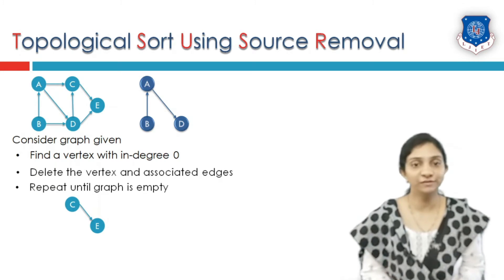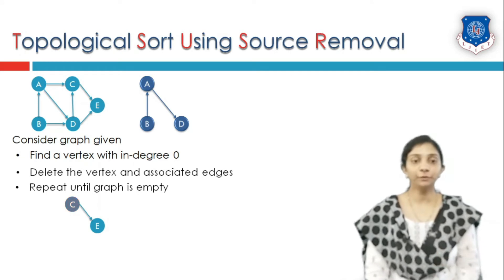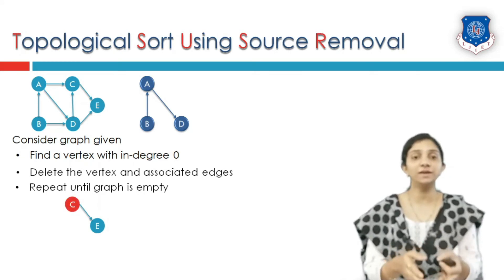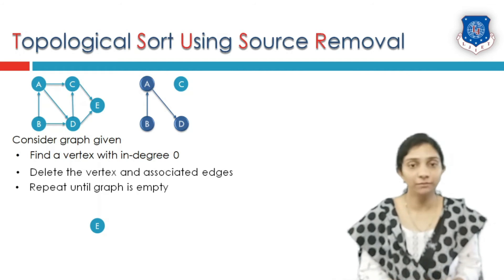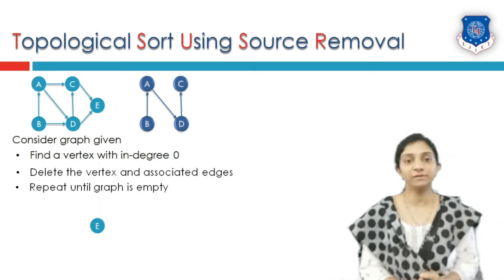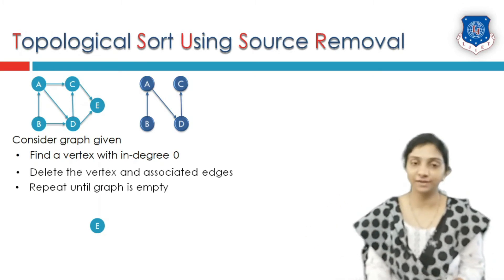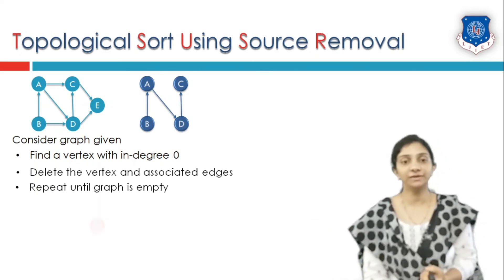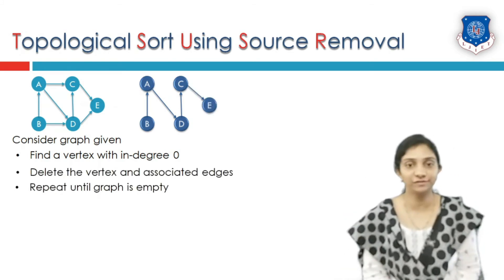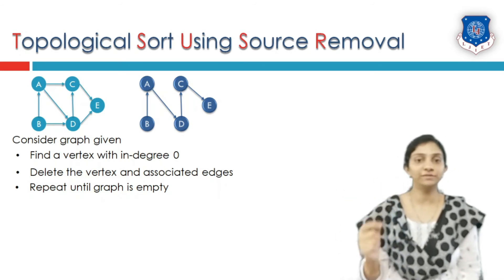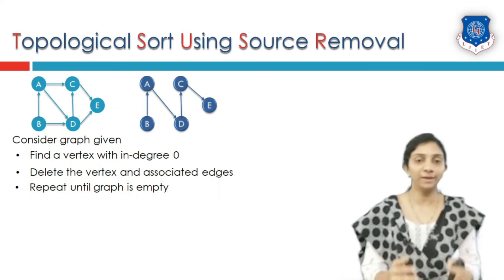Next, from the remaining graph, find a vertex having in-degree equal to 0. We remove that vertex and its associated edges and add it to the result. Continuing this process, from the remaining graph the next vertex with in-degree 0 is found, removed, and added to our result. Finally, the only vertex left is vertex E. It is not having any in-degree — that is, in-degree equal to 0. It is removed from the graph and added to our result. Our graph is now empty, so this process of removing must stop here.